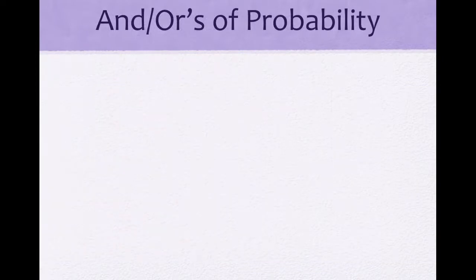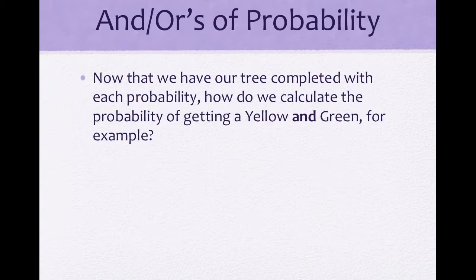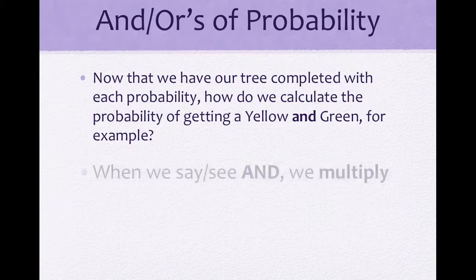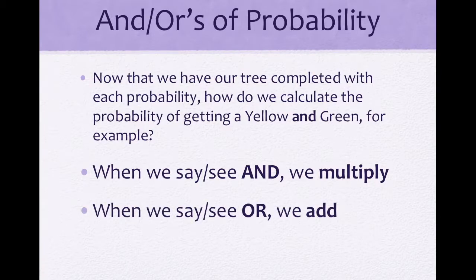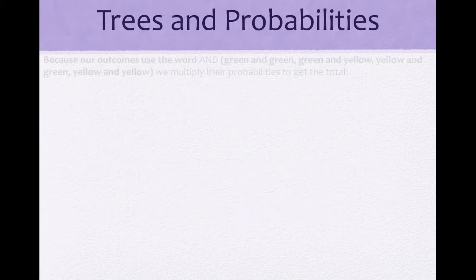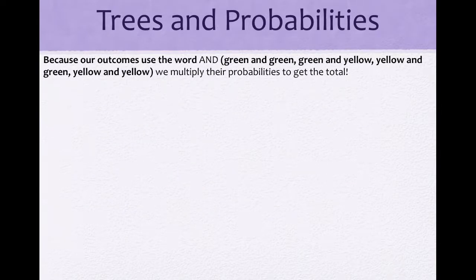Now I need to explain the and/ors of probability. When we see the word 'and', we multiply. When we see or imply the word 'or', we add. In our case, our outcomes use the word 'and': green and green, green and yellow, yellow and green, yellow and yellow. So we're going to multiply their probabilities to get the total.